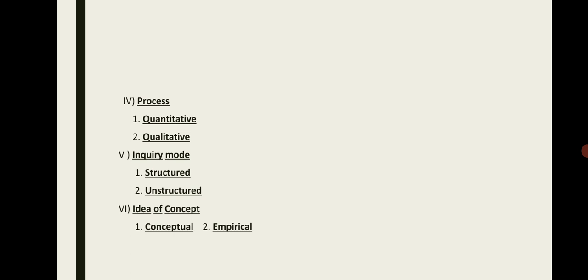This is the basic table of classification of research. The basis of classification includes: objective, outcome, logic, process, inquiry mode, and idea or concept. These are very important in research, and according to these we classify the types of research.